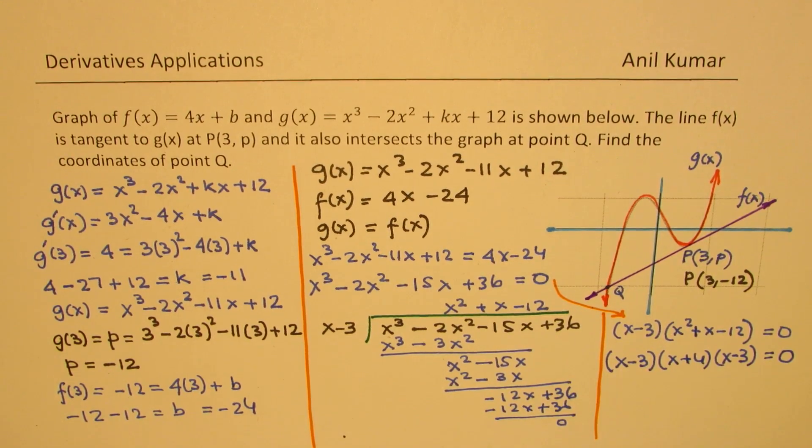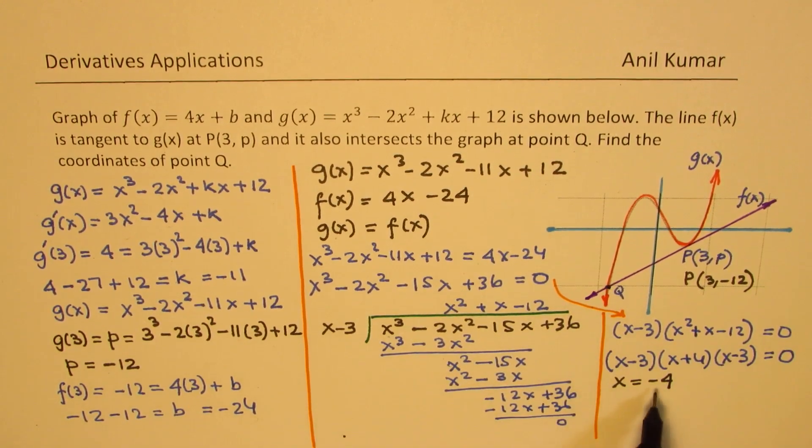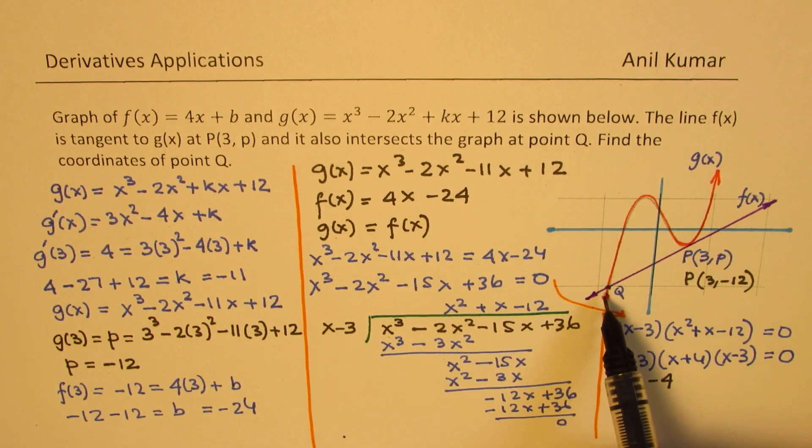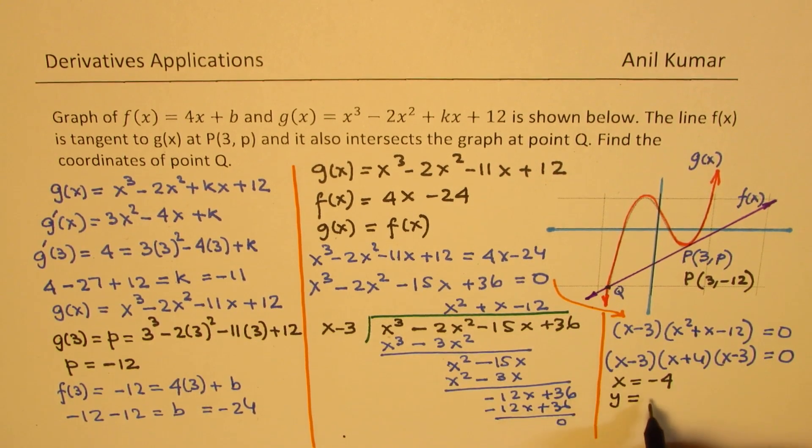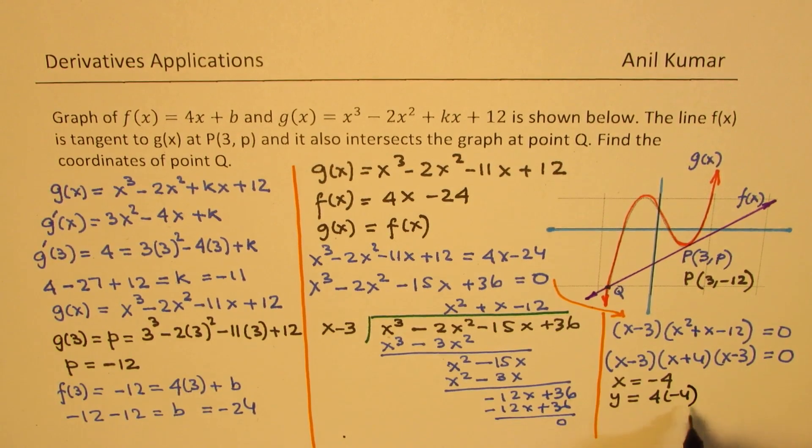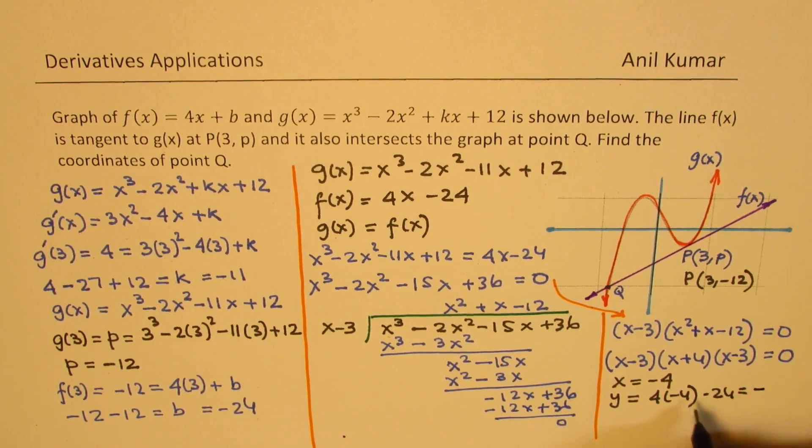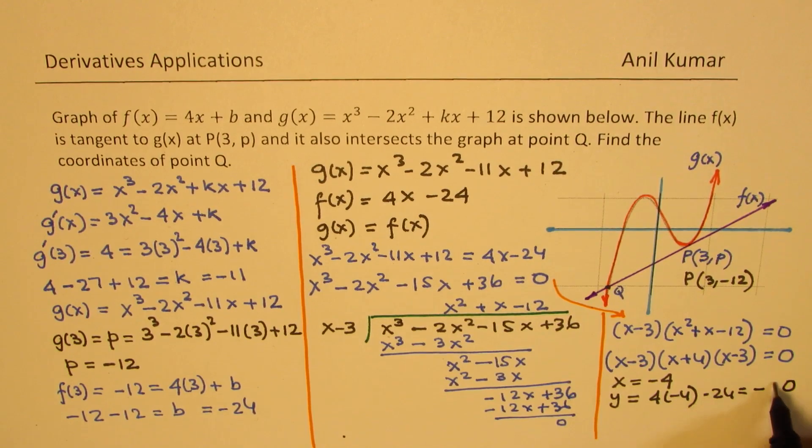So another value which satisfies this equation is x = -4, and that is kind of evident from the graph also. So we can always find the y value by substituting this value in the equation of the line, since it happens to be on both the curves. So the y value will be 4(-4) + (-24), which is -16 - 24 = -40.